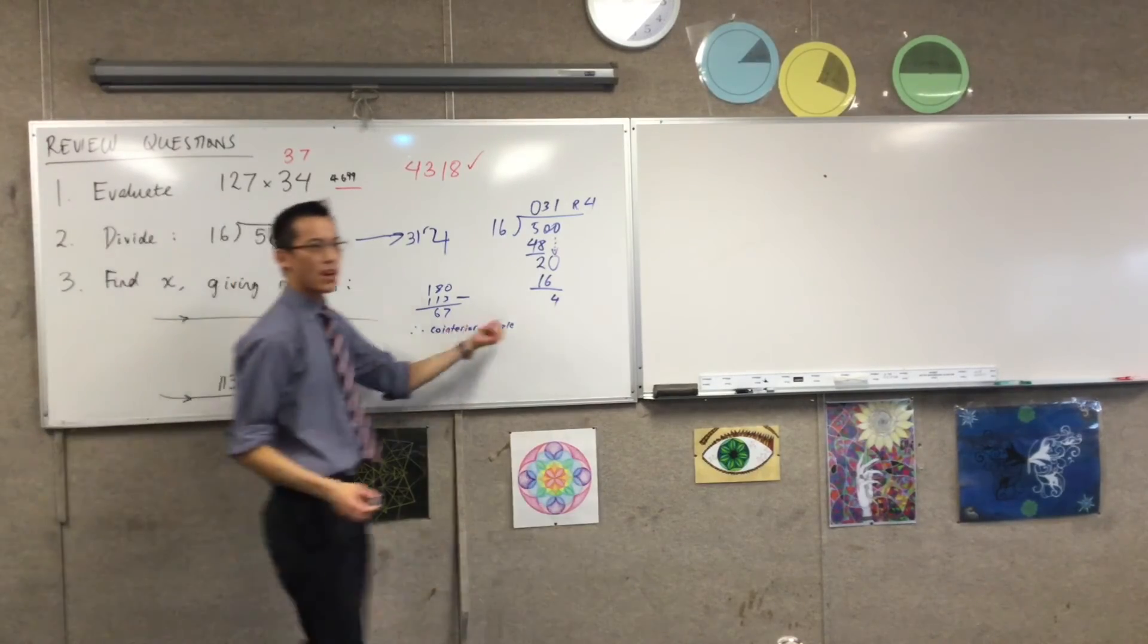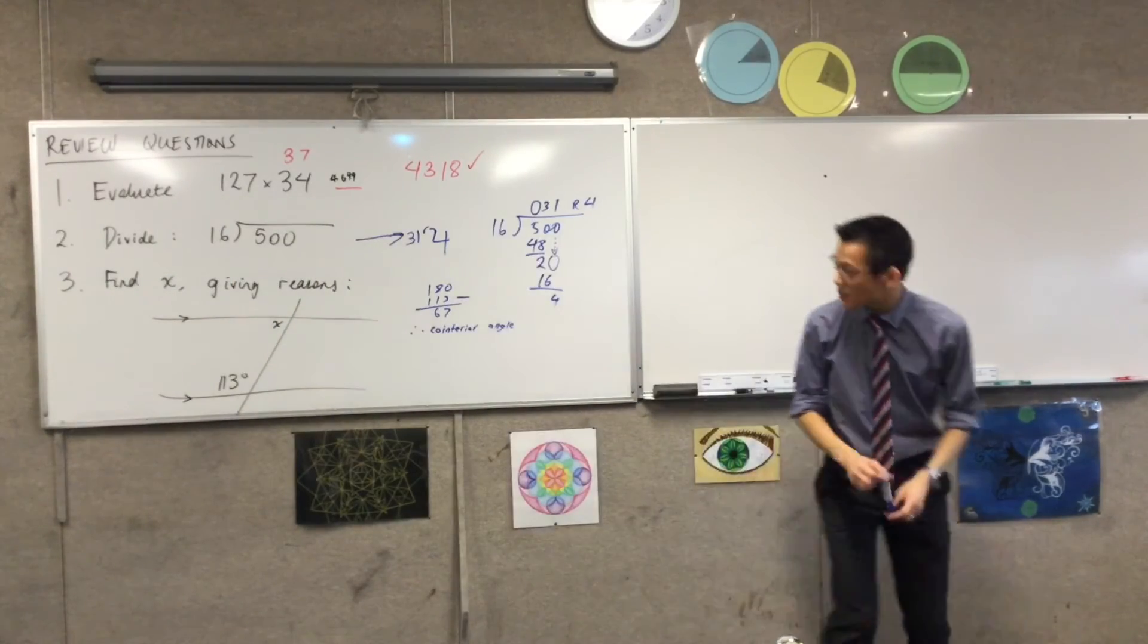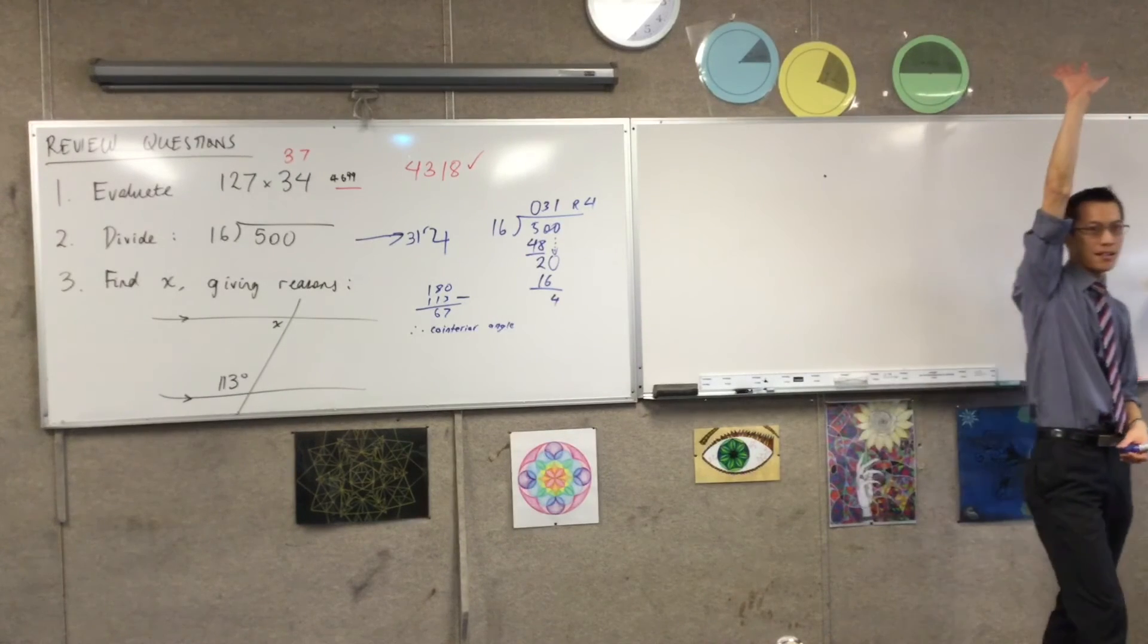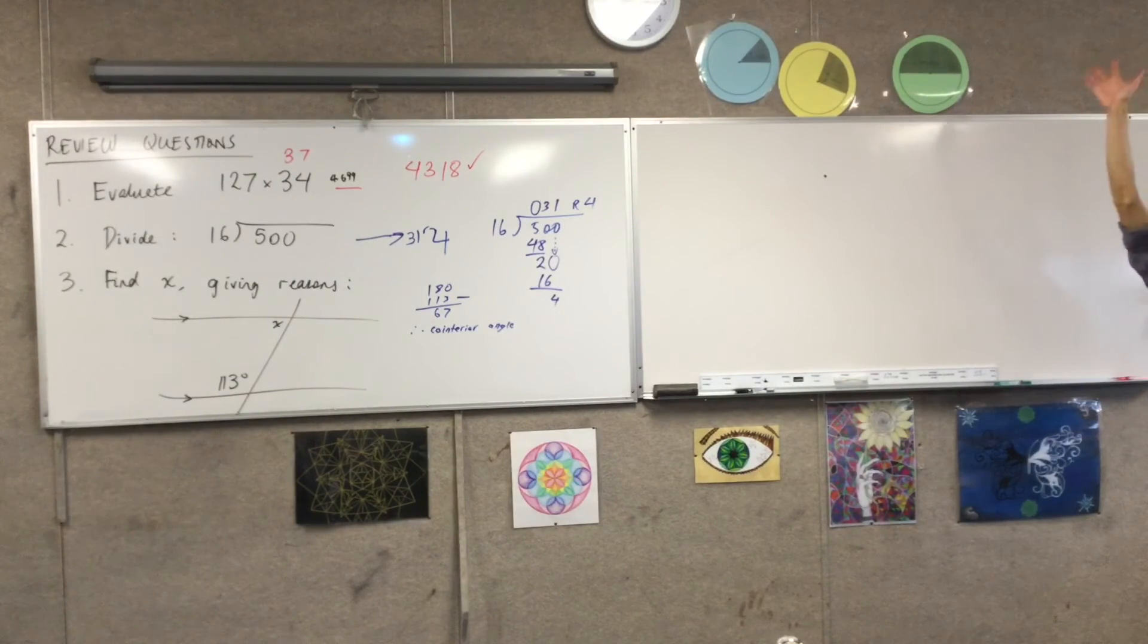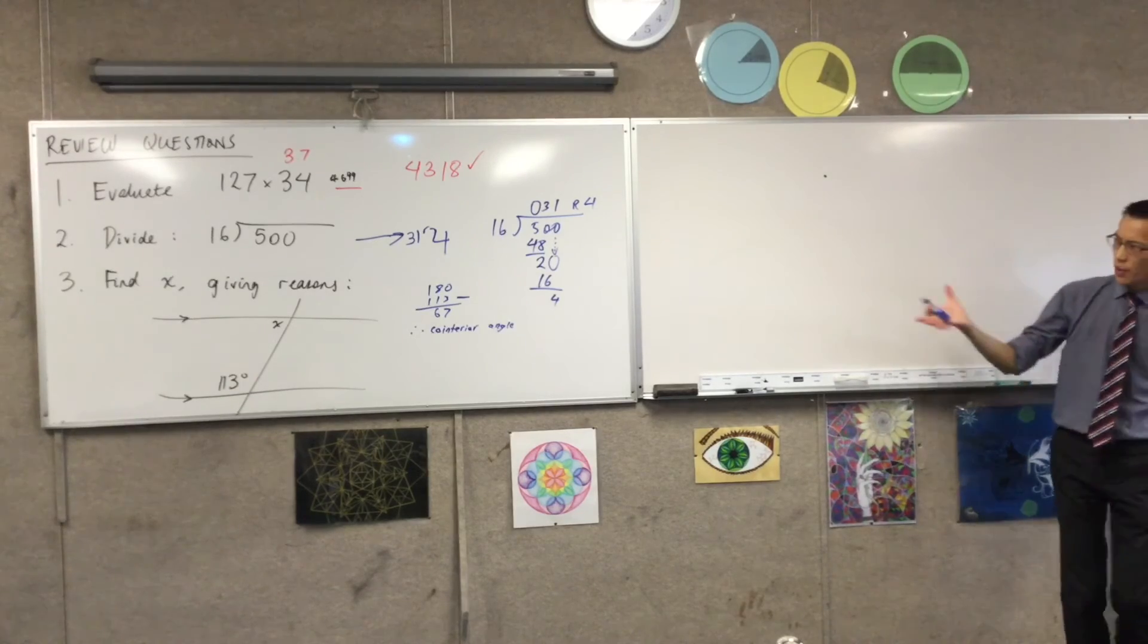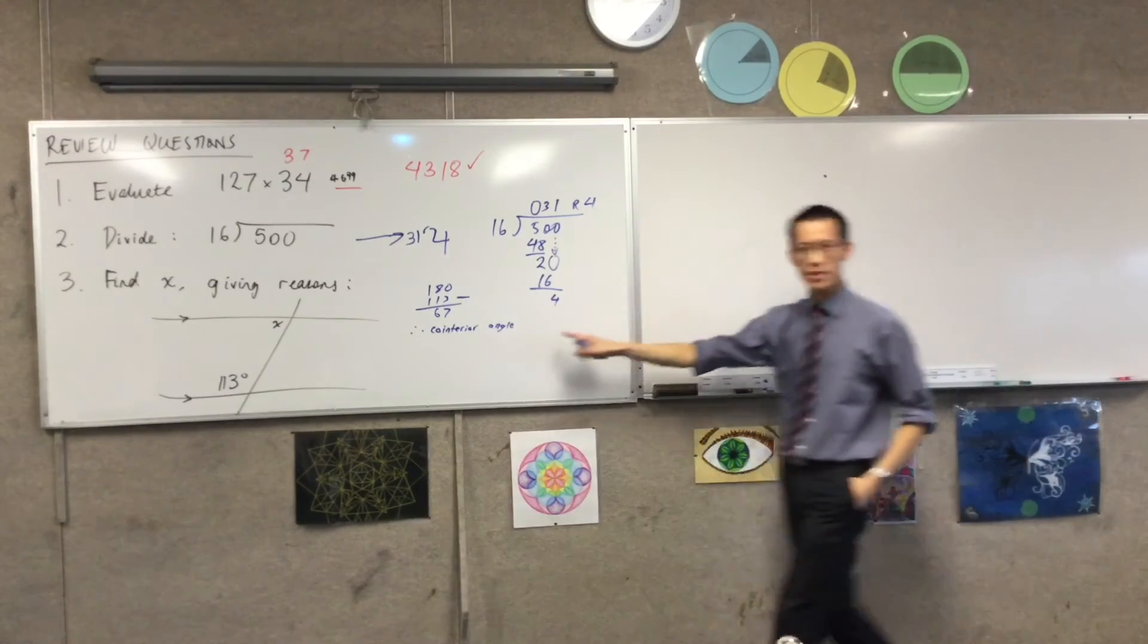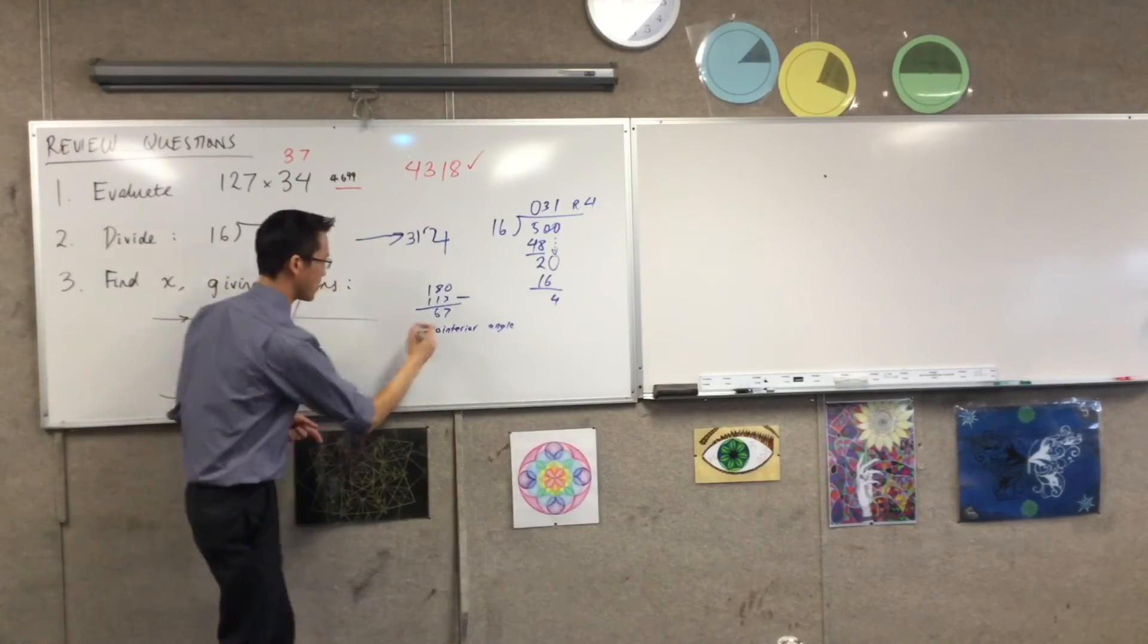Okay. This last bit here. What do you guys think of our answer here? X equals sixty seven. Who's happy with that? Hands up. Yep cool. Well done. I'm going to add in. I think we should include one extra thing. When it says giving reasons. I think this is the beginning. This is the beginning of our reason.